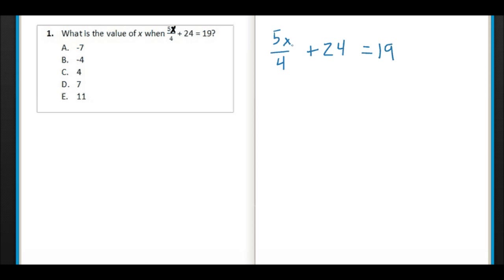Now in algebra you're trying to get the variable, in this case X, by itself. Algebra is about undoing. What's been done to this equation is 24 has been added, so that means we're going to subtract 24 as our first step.